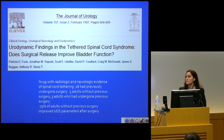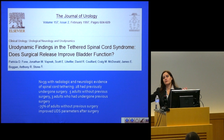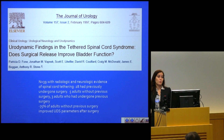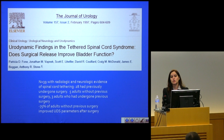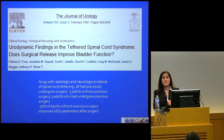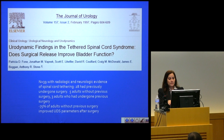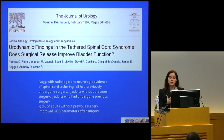I found one study particularly interesting because they evaluated 39 patients and divided them into two groups: one with secondary tethering and one with occult dysraphism or occult tethered cord newly diagnosed in adults. Even though most had urinary symptoms, they compared preoperative to postoperative urodynamics and saw an overall 75% improvement. However, patients with occult tethered cord did better — 62.5% had improvement in urodynamic findings versus only 30% of those with secondary tethering. This suggests that patients with occult tethered cord may benefit even more from surgery.